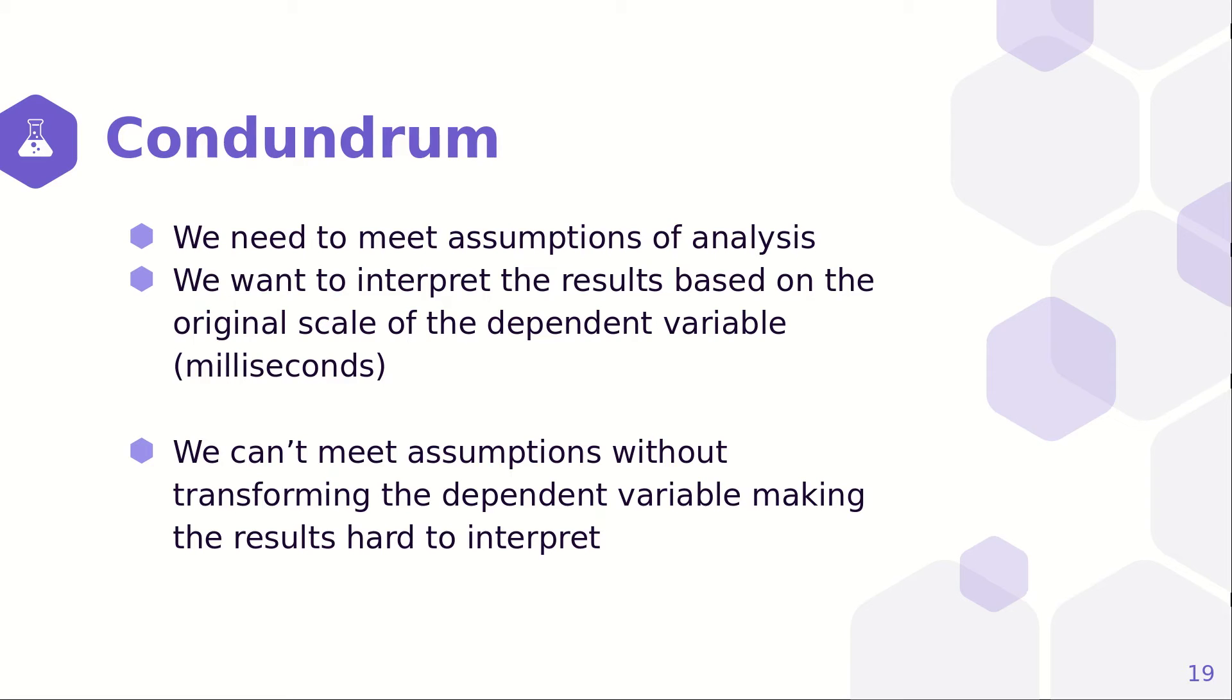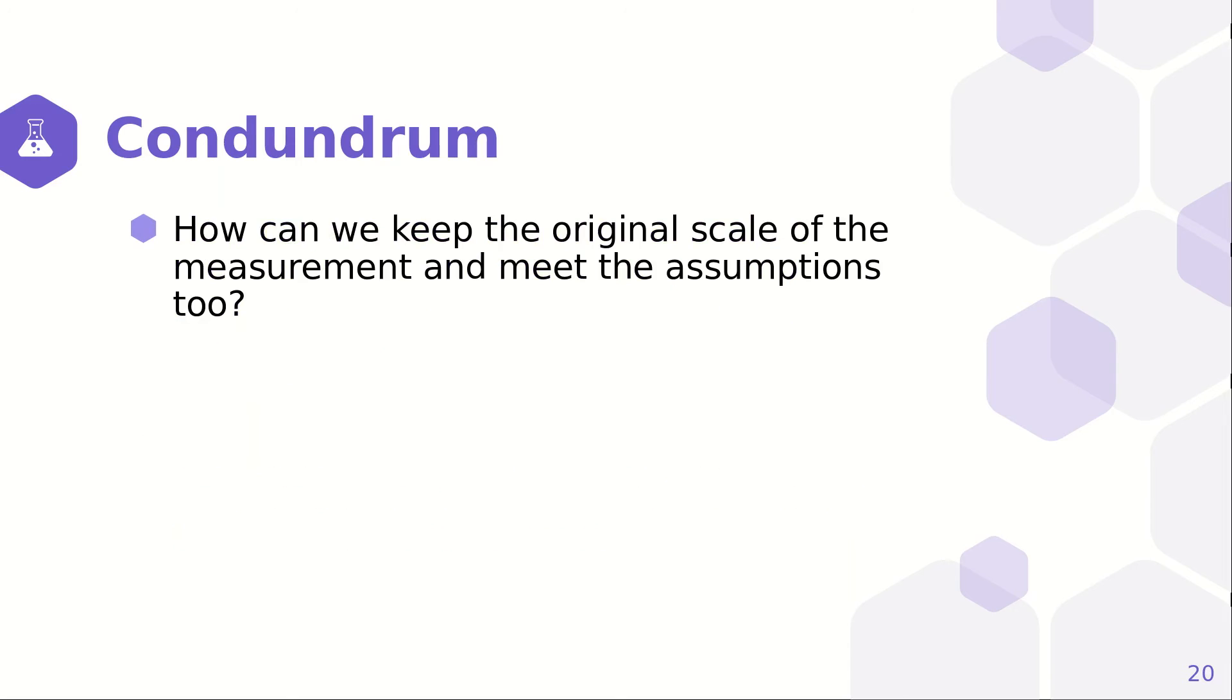So, we're in this conundrum. We need to meet the assumptions of the analysis, but we want to be able to interpret the results based on the original scale of the dependent variable, in this case, milliseconds. So, we can't meet the assumptions without transforming the dependent variable, making the results hard to interpret. So, how can we have our original scale of measurement and meet the assumptions, too?